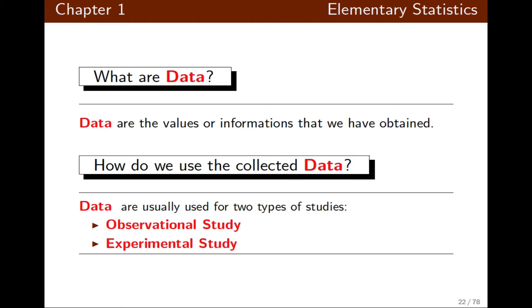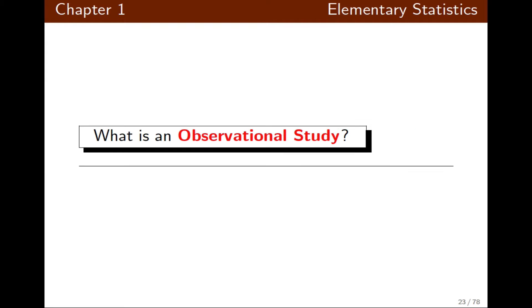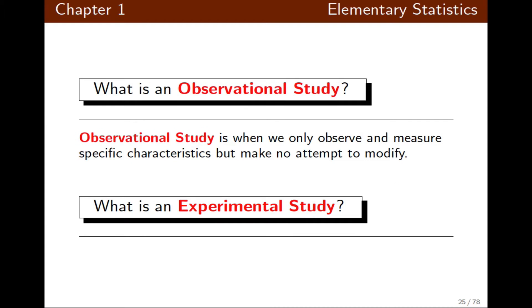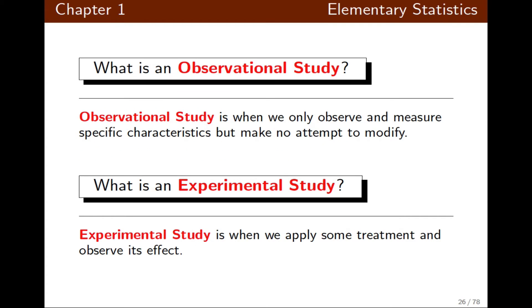One is observational studies and the other is experimental studies. What are observational studies? It is when we only observe and measure a specific characteristic but we make no attempt to modify the result. Experimental studies is when we apply some treatment and we observe its effect.